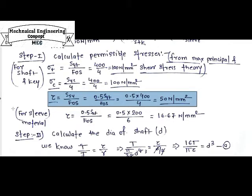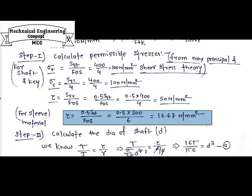For the sleeve material — gray cast iron FG 200 — Tau is calculated as 0.5 times Sut divided by FOS, because gray cast iron is a brittle material. For brittle materials we use Sut instead of Syt for shear stress. So Tau = 0.5 × 200 / 6 = 16.67 N/mm².